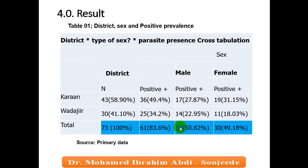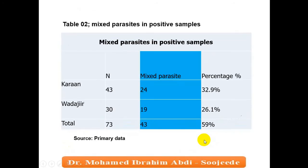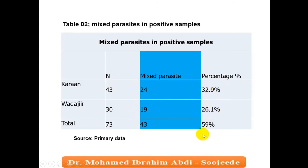The male positive total was 31 and female positive was 30. Table 2 shows how many mixed parasites were found in positive samples — it is possible to get more than one parasite per sample. In Karan, 24 samples had mixed infections. In Wadajir, 19 samples were positive for mixed infections, representing 32.9% and 26.1% respectively, totaling 59%.